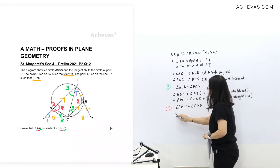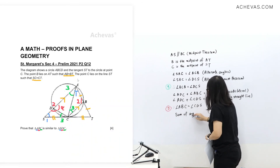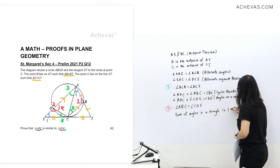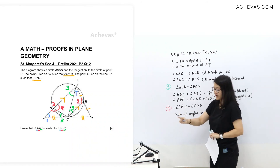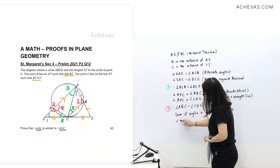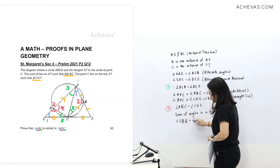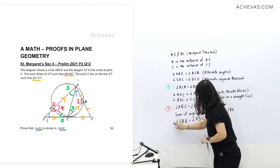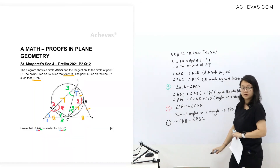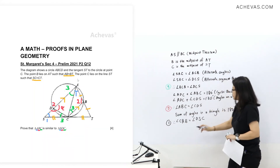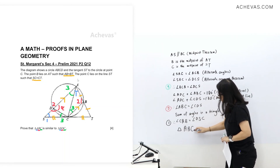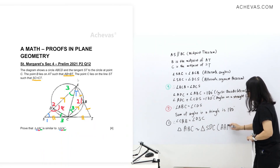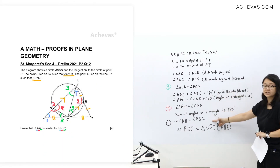Because the sum of angles in a triangle is 180 degrees, the remaining angle number 1 — angle BAC — must equal angle DSC. So, using this rule, we have proven that triangle ABC is similar to triangle SDC using angle-angle-angle, since all three corresponding angles are the same.